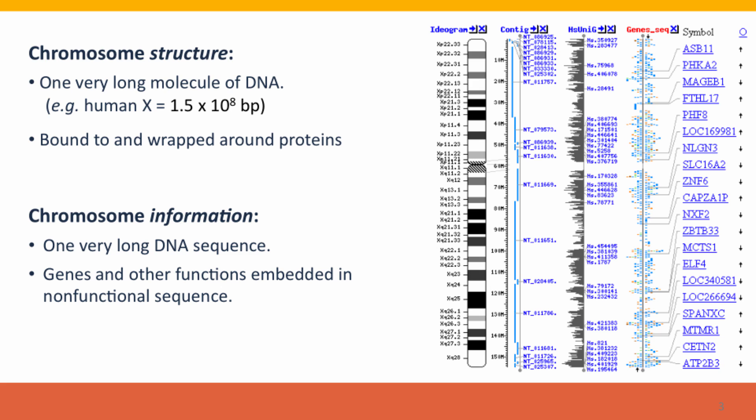Structurally, a chromosome is one very long molecule of DNA. Human chromosome X is 150 million base pairs long — very long. And the DNA isn't naked in the cell; the DNA is bound to and wrapped around proteins, as we described earlier. Informationally, a chromosome is one very long DNA sequence, and embedded in this sequence are sequences that specify genes and other functions, embedded in a background of non-functional DNA sequences. The diagram on the right shows various representations of aspects of the human X chromosome.